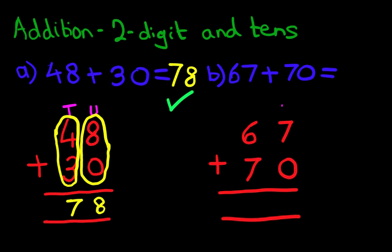So, we have the units column on the right-hand side, and the tens column next to it. Now, what we do is, we first add the column on the right-hand side first.